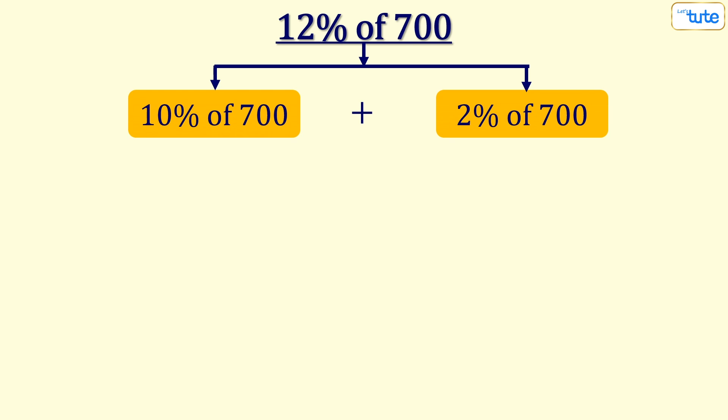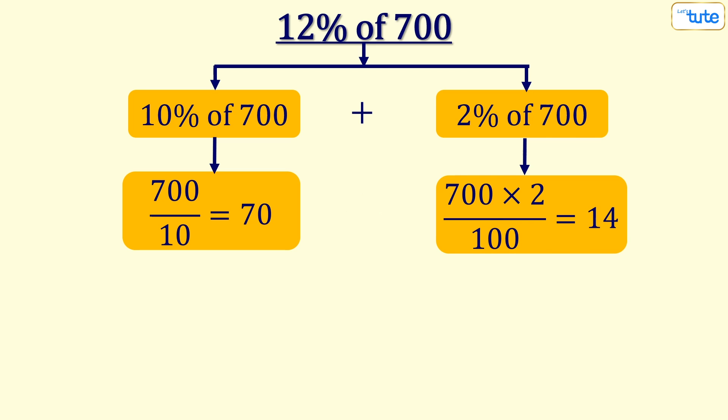First, we will split 12 percent in such a way that we could easily calculate percentage of those numbers. As a result, we divided 12 percent into 10 percent and 2 percent. 10 percent of 700 is 70 and 2 percent is 14.